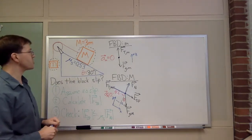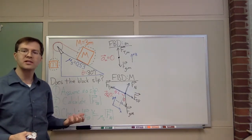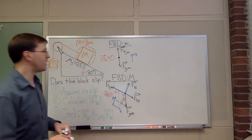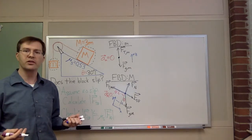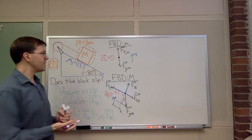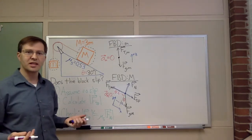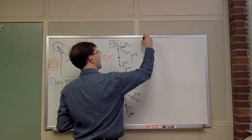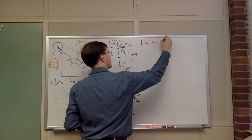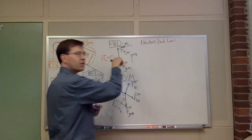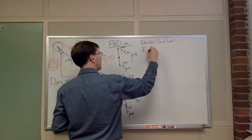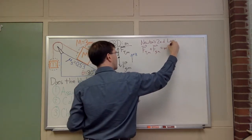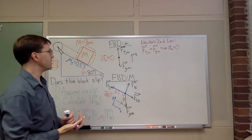I've drawn my free body diagrams. My next step is always to write down Newton's second law in components. The notation I've been using is a column vector notation for forces. For my first free body diagram, Newton's second law reads: the sum of forces equals mass times acceleration. So: force of tension on the little mass plus force of gravity on the little mass equals little m times acceleration of the little mass, which equals zero since we have no acceleration.